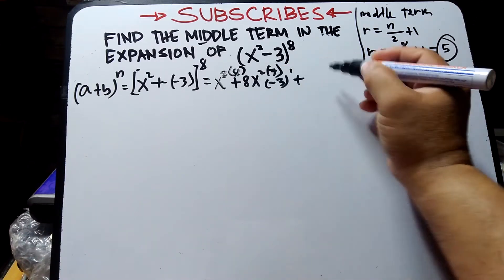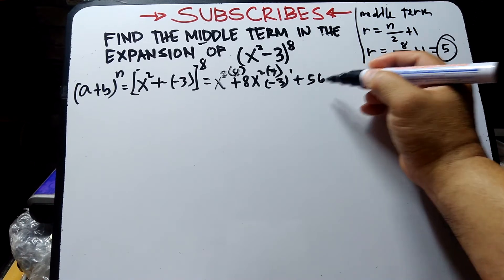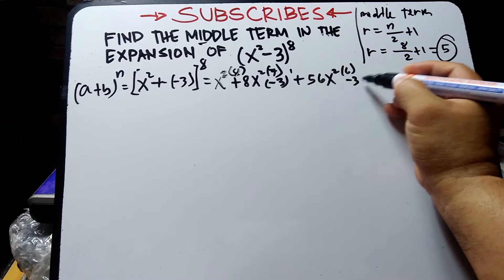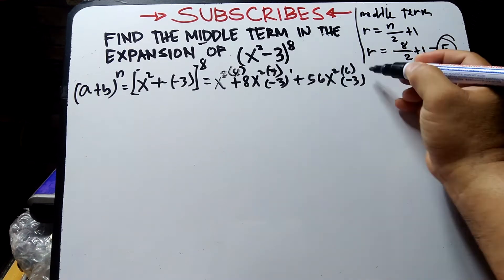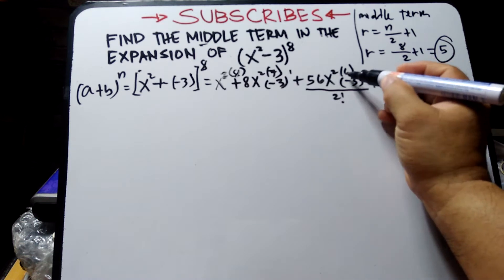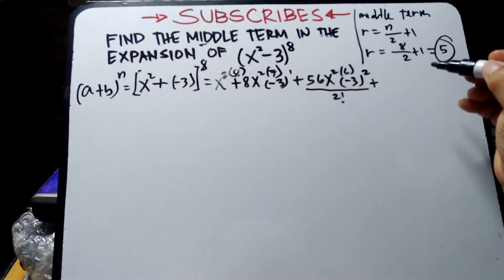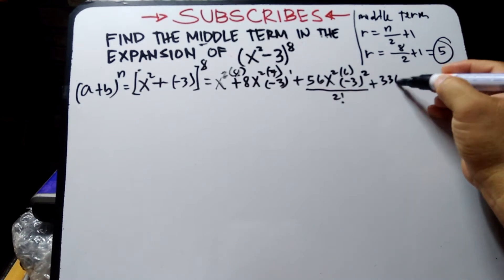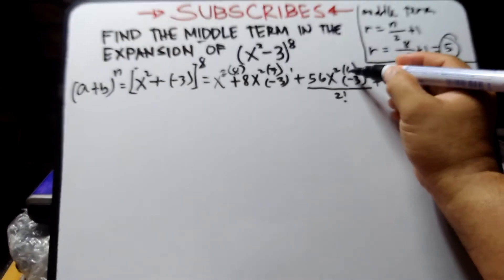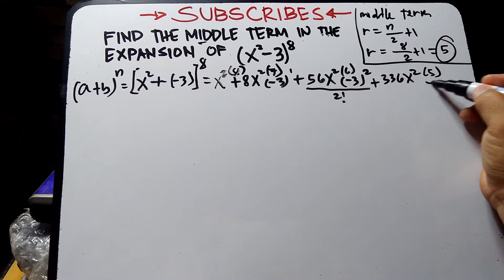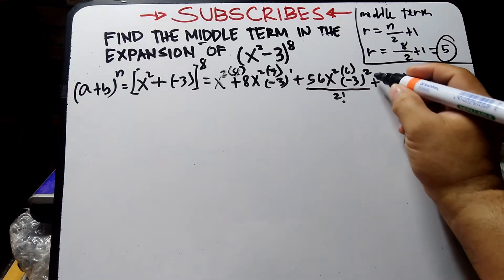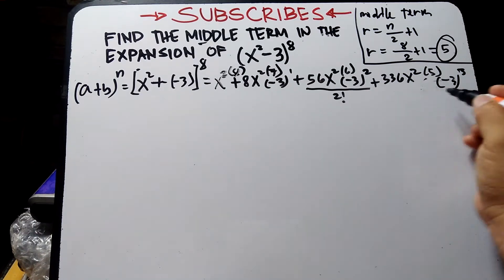Plus 7 times 8 equals 56, times x² raised to 7 minus 1 becomes 6, multiply by -3 raised to 1, now 2. Then 2 factorial, plus 6 times 56 equals 336, x² to the 5, multiply by -3 raised to 3, over 3 factorial, then 4 factorial continues.